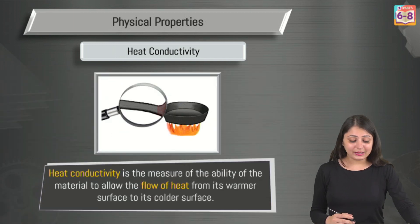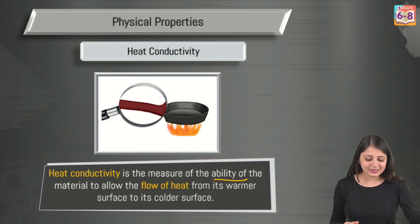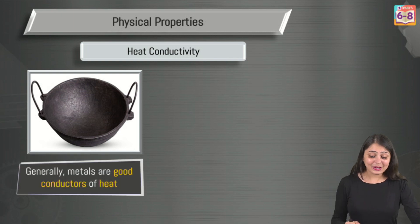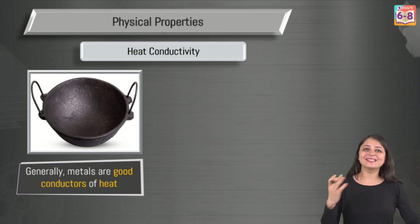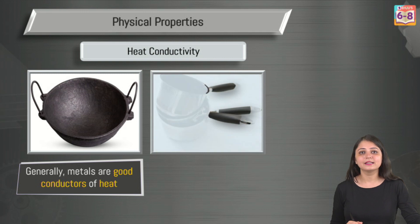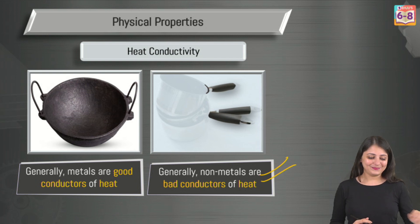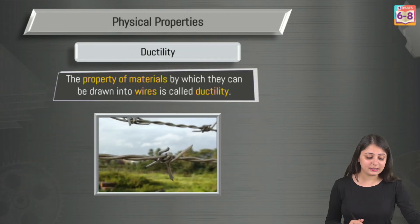Heat conductivity is the measure of a material's ability to allow the flow of heat. Metals are very capable of conducting heat — silver and copper are among the best conductors of heat. That's why many utensils are made of metals. However, the handles of utensils are made of wood or plastic, because nonmetals are poor conductors of heat, so you won't feel the warmth and it will be comfortable to hold.